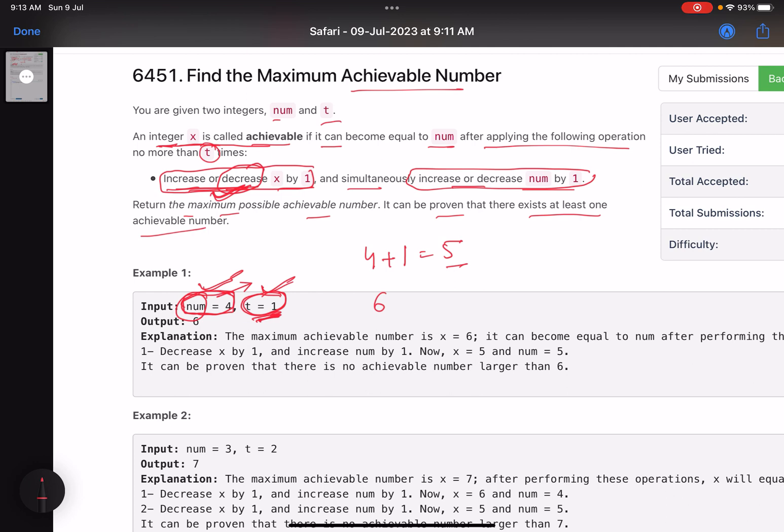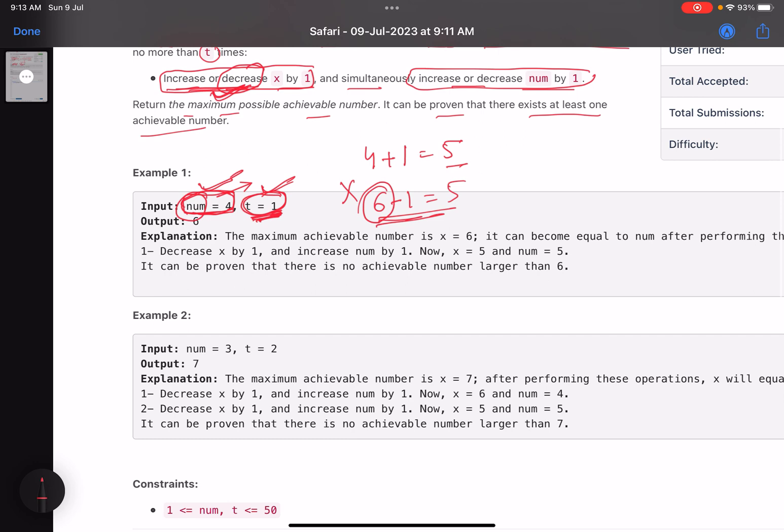I have to choose a number x, the maximum number, so that if I decrement it t times it becomes equal to the number which is incremented by t times.